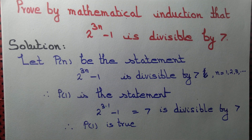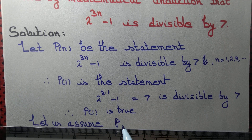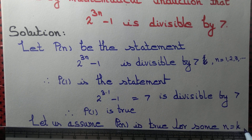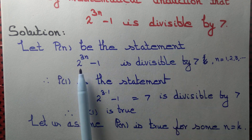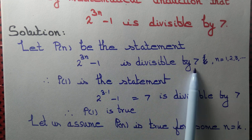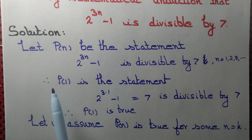7 is divisible by 7, of course. Now, once we have the starting point, we should have some kind of cycling. We assume P(n) is true for some n equal to k. To recap: we defined the statement P(n) to be 2 to the power 3n minus 1 is divisible by 7, for n equal to 1, 2, 3, 4, 5, 6, and so on. After defining, we showed that the starting point is true for n equal to 1 — P(1) is true.